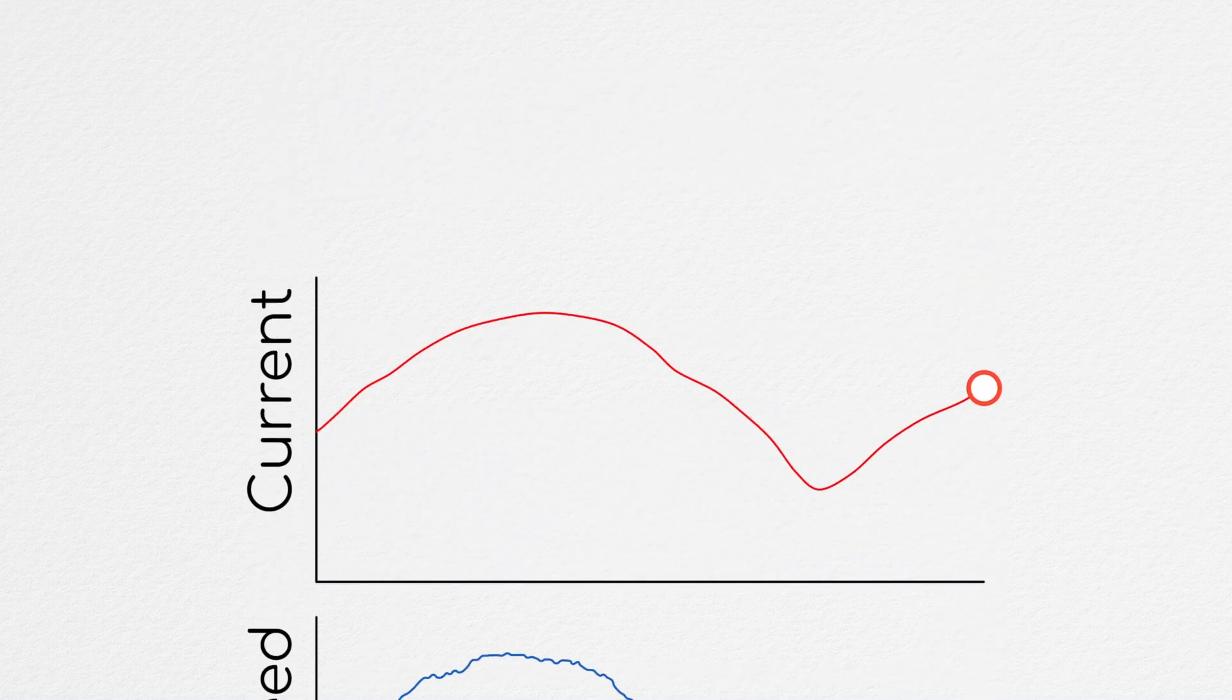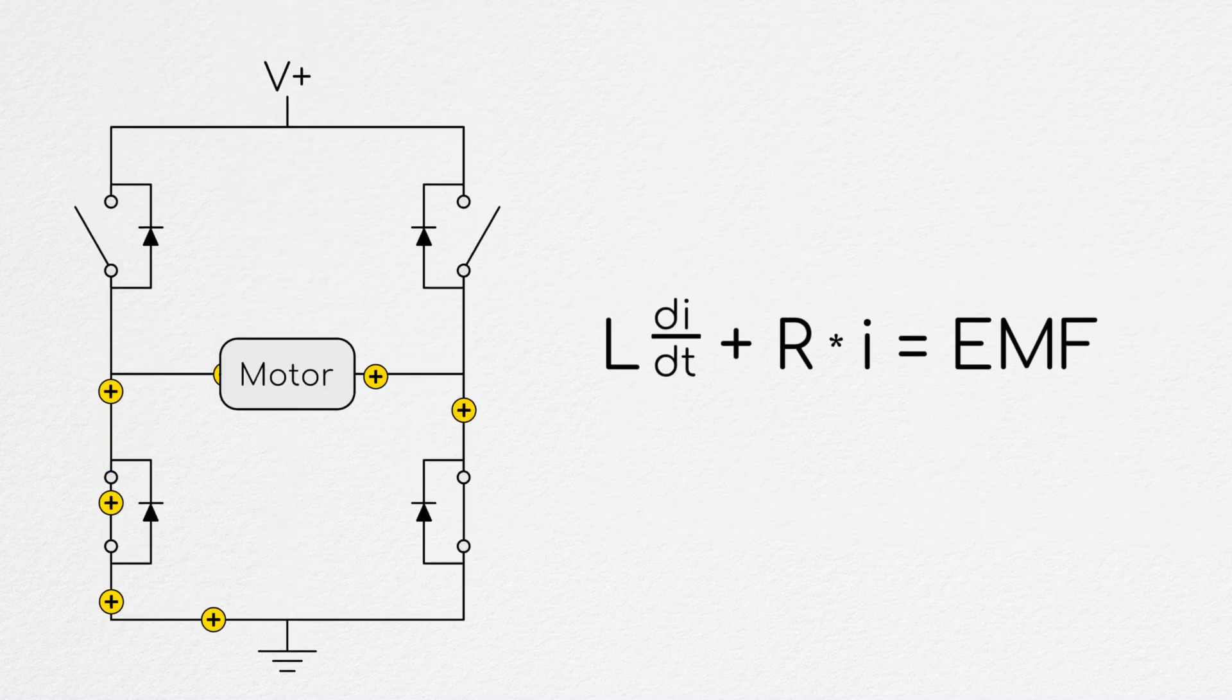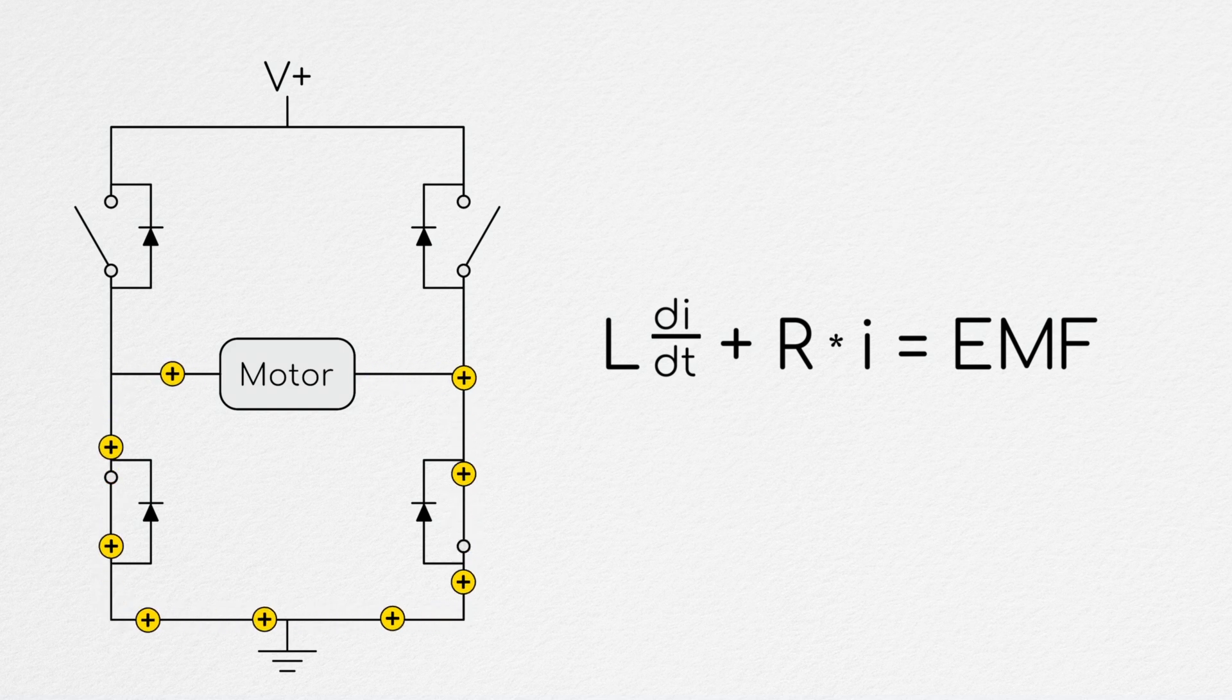And at this point, the astute among you will be saying, cool, we can generate a current at low speeds now, but we're not capturing any energy back. And you're right. In this configuration, we're just driving current in a loop, and it's not going back into our supply.